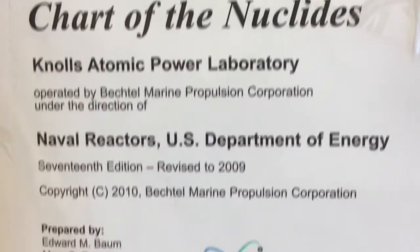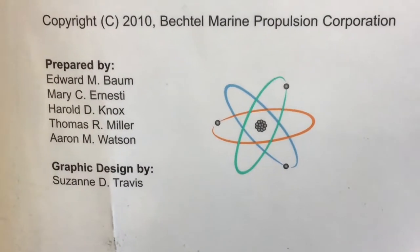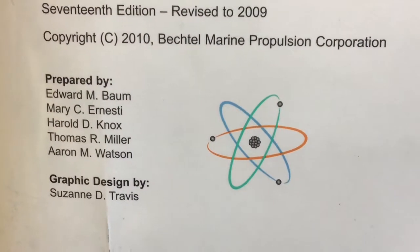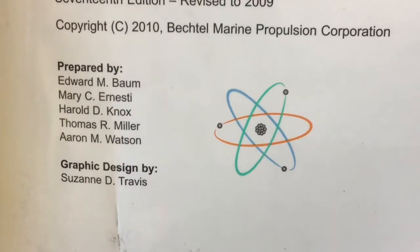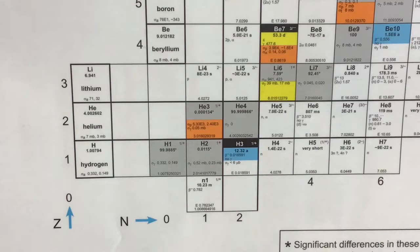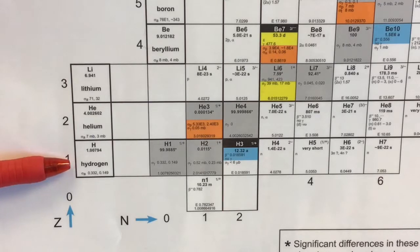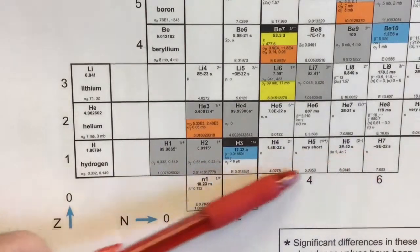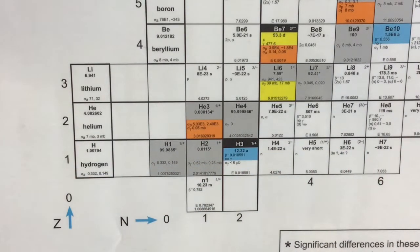This is a chart of the nuclides and isotopes. First, let's take a look at hydrogen — atomic number one. You think it's just one proton, but it's not that simple. There are one, two, three, four, five, six, seven total isotopes of hydrogen that we can either create in the lab or are naturally occurring.